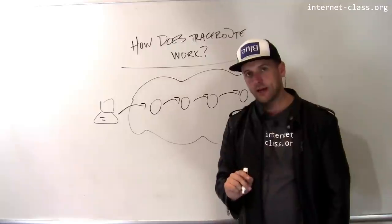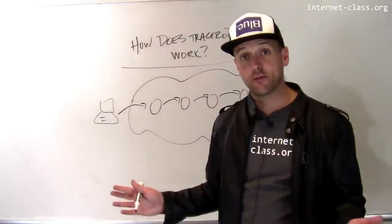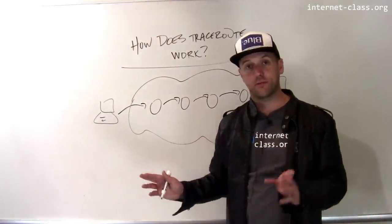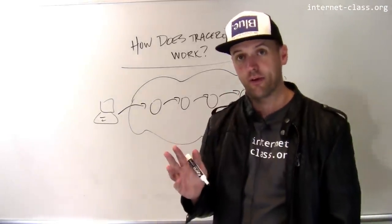What I'm interested in knowing is what are the identities of these routers. These routers are addressable, they have to have public IP addresses, otherwise they wouldn't be able to transmit data to each other. So how do I figure out what those IP addresses are?